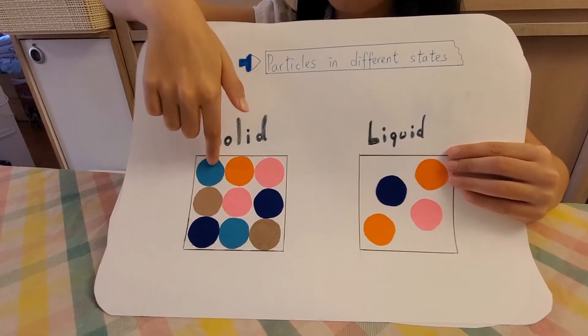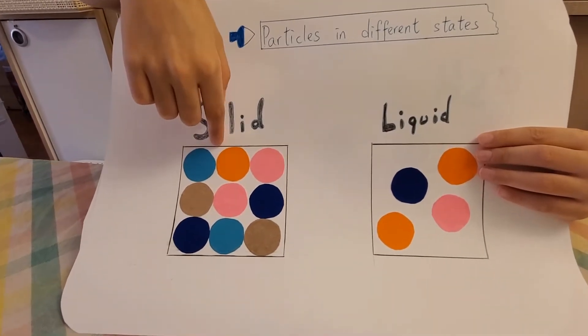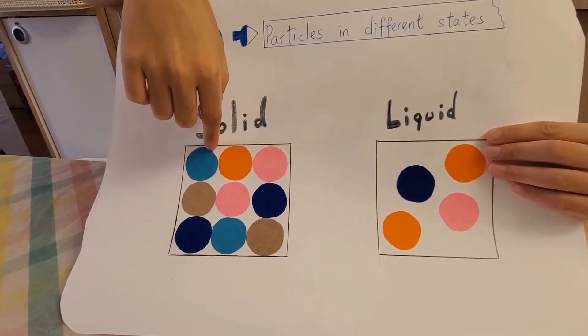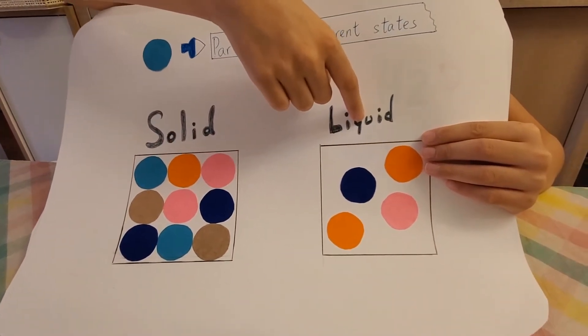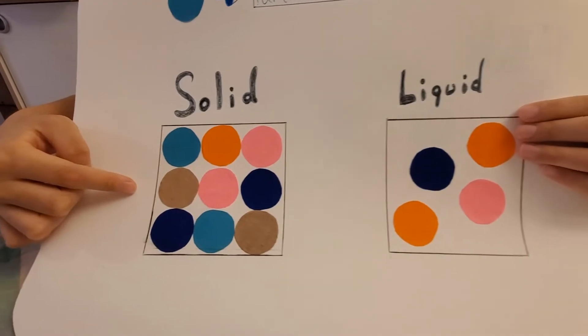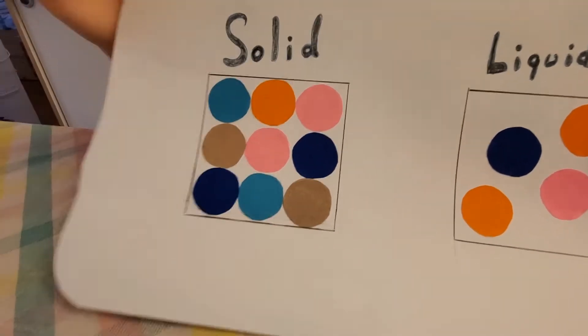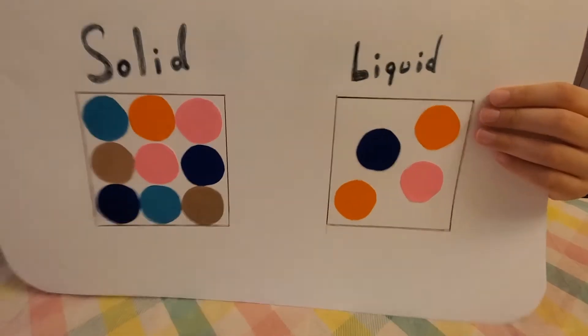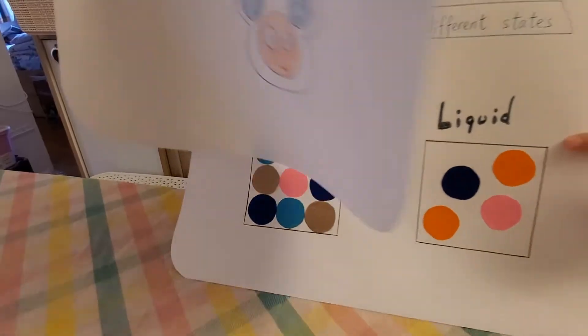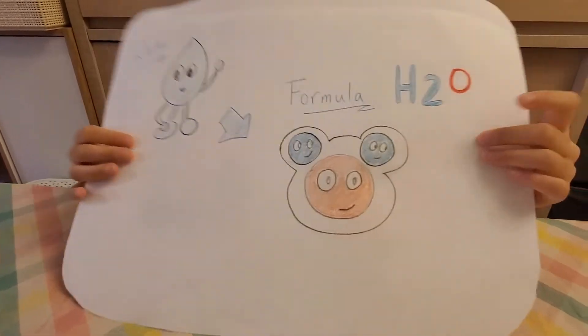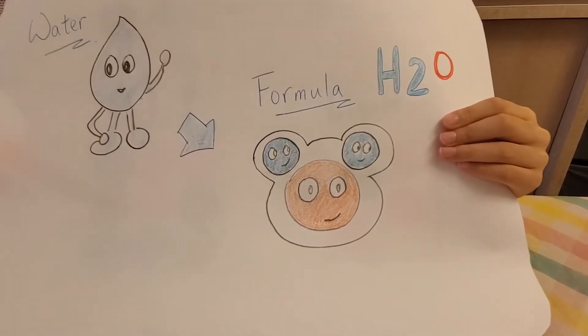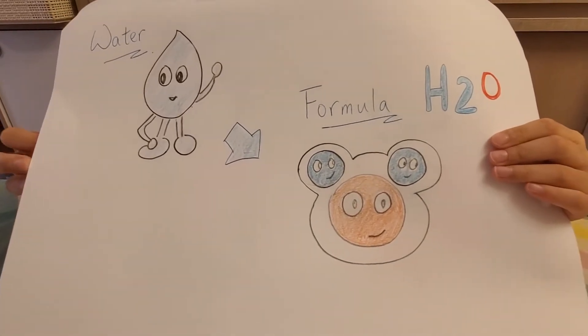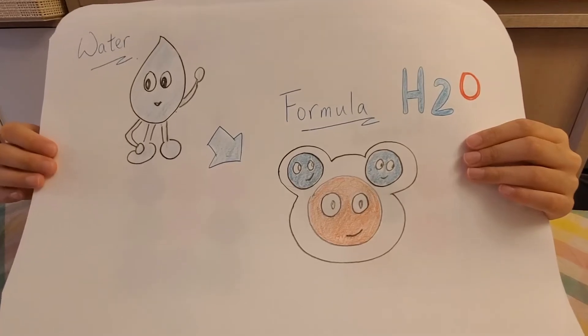Usually, particles in the solid state pack closer to each other than in the liquid state, and this results in the higher density in solids. However, water, otherwise known as H2O, is special. The particles pack closer in water than in ice.